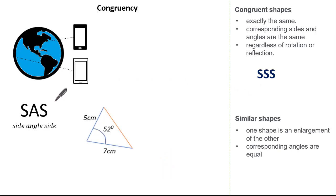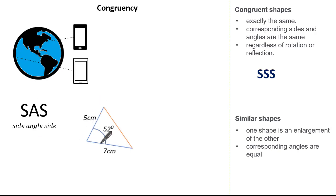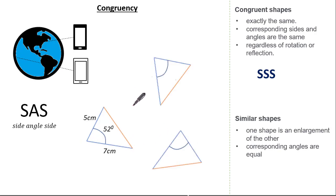This is the same for side angle side. If you were to call your friend and only give them three pieces of information — a side, an angle, and a side — say 5cm, a 52 degree angle, and an adjacent side length of 7cm, your friend will draw the exact same triangle. It may be rotated or reflected, but it will be congruent. So the condition of side angle side will always give us a congruent shape.